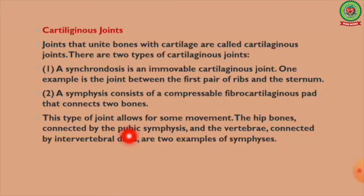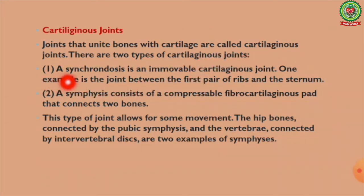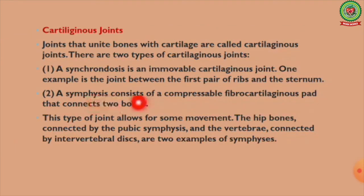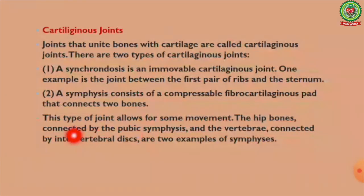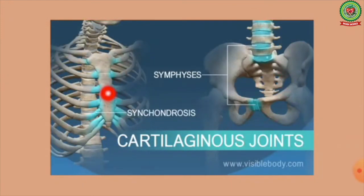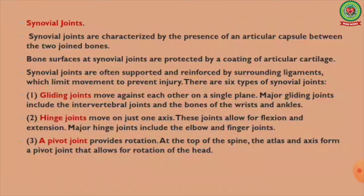Joints that unite bones with cartilage are called cartilaginous joints. There are two types. First, synchondrosis — an immovable cartilaginous joint; an example is the joint between the first pair of ribs and the sternum. Second, symphysis — consists of a compressible fibrocartilaginous pad connecting two bones, allowing some movement. The hip bones connected by the pubic symphysis and the vertebrae connected by intervertebral discs are two examples of symphysis.